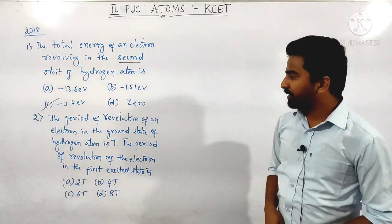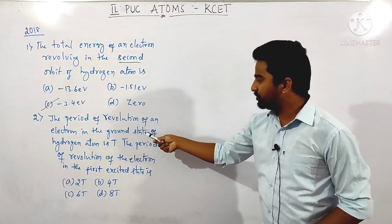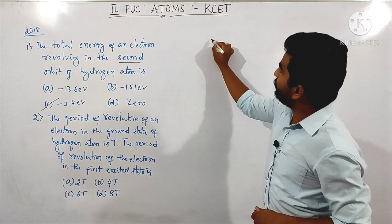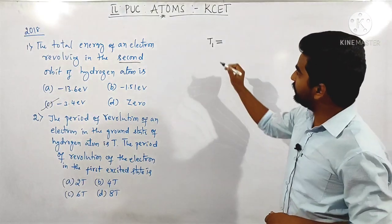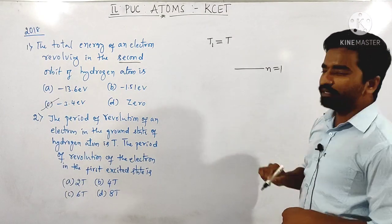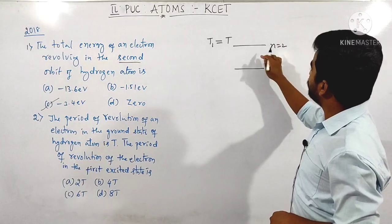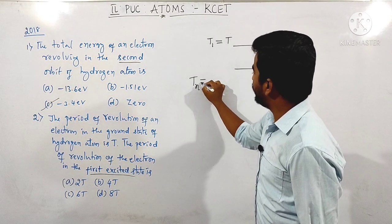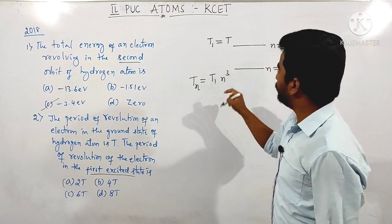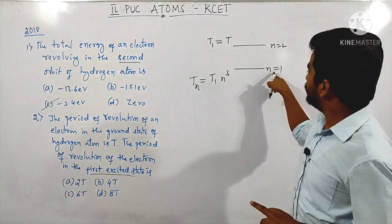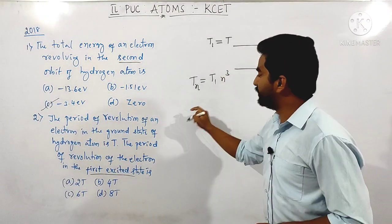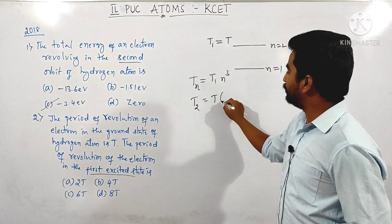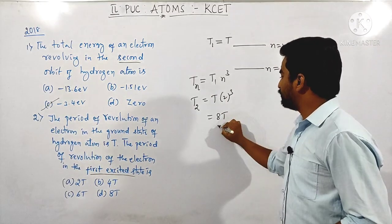Next question asked in 2018: the period of revolution of an electron in the ground state of hydrogen atom is T. What is the period in the first excited state? The ground state is n = 1 (period = T), and the first excited state is n = 2. Time period in the nth orbit is T₁ × n³. So T₂ = T × 2³ = 8T. The answer is 8T.